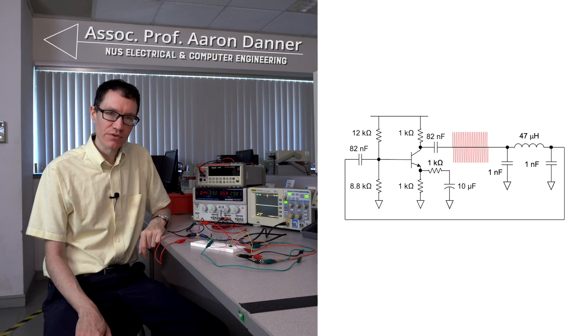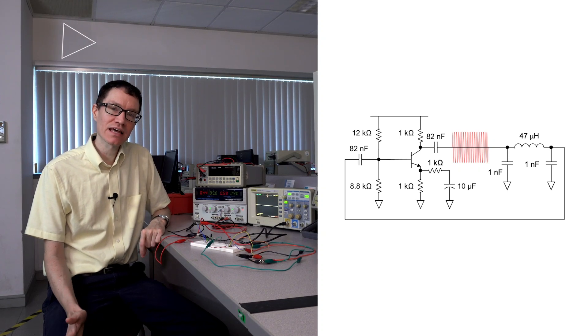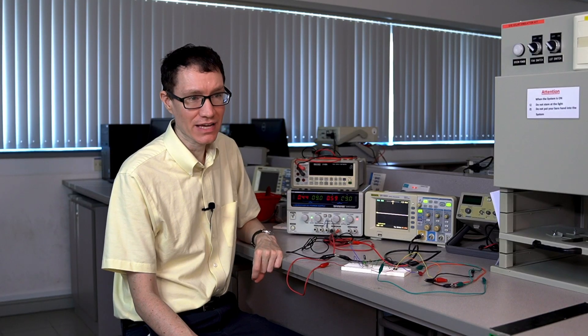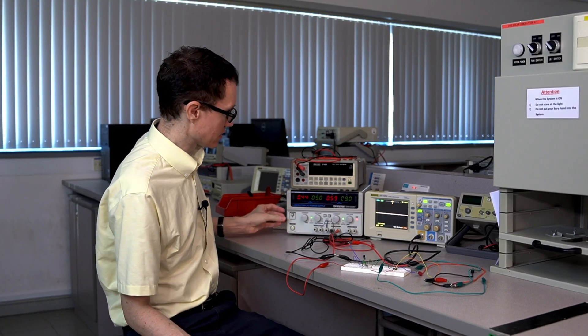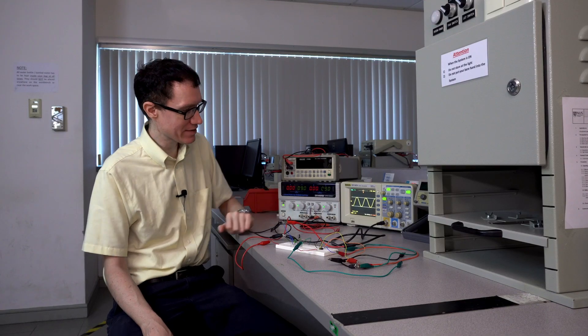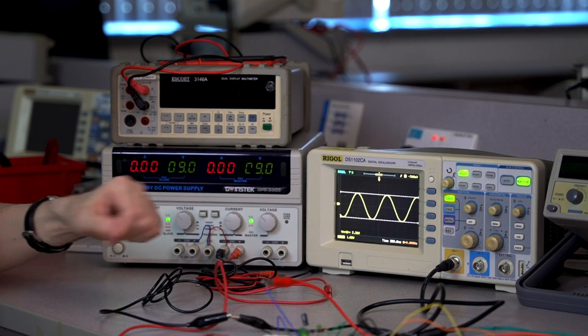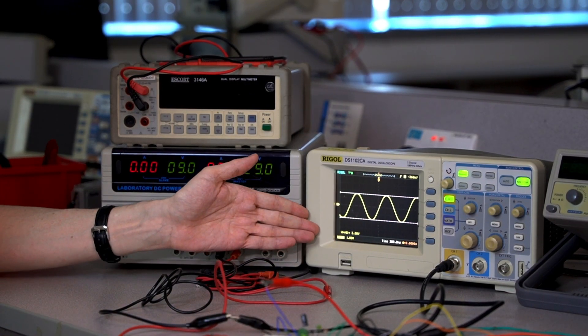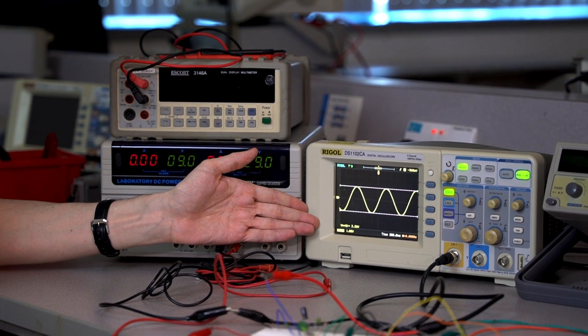I've wired up the Colpitts oscillator that we designed in a previous video because I'd like to take a closer look at the sine wave at the output of the oscillator. I've got our DC power supply set to 9 volts, and at this particular setting, the peak-to-peak voltage of our output sine wave is 3.36 volts.